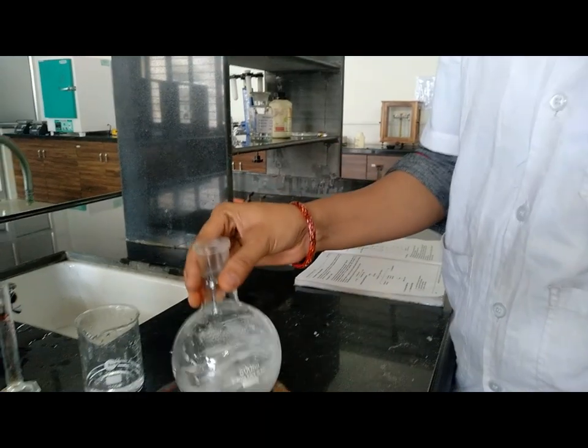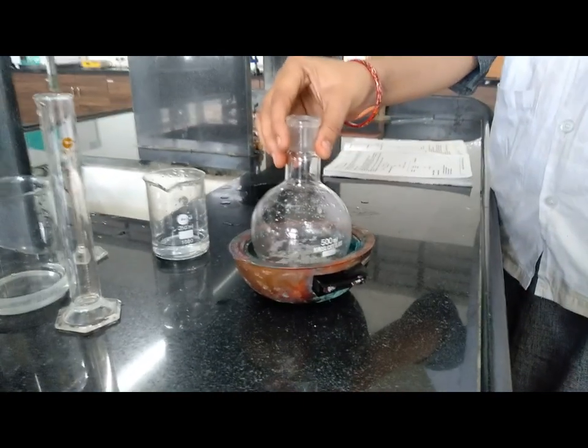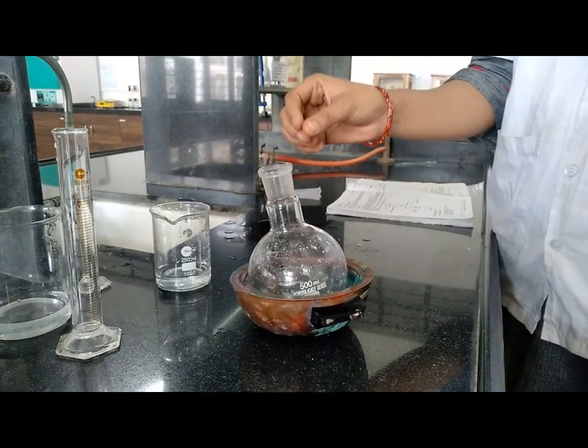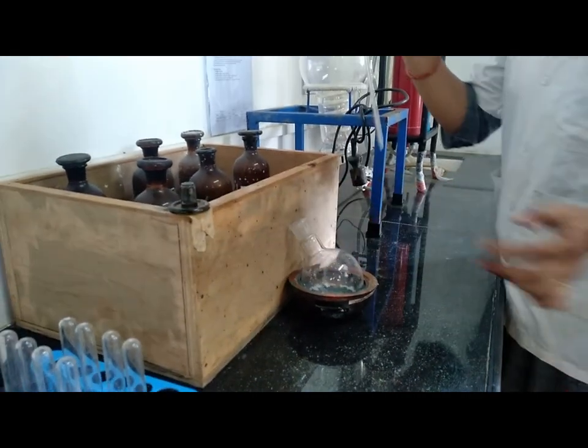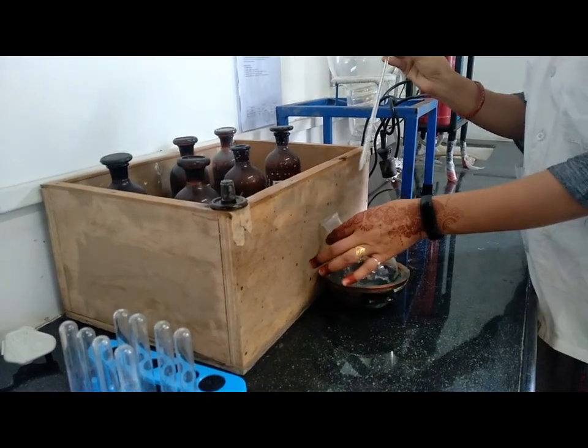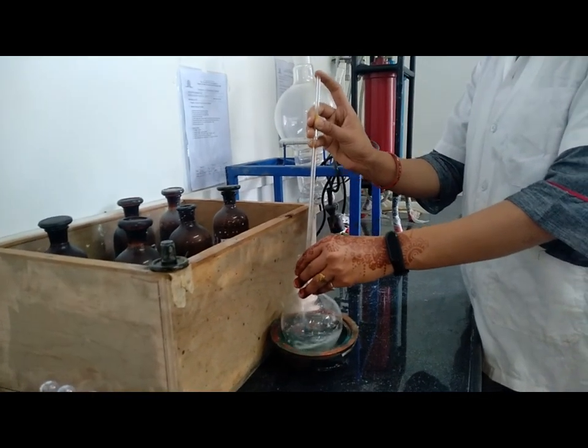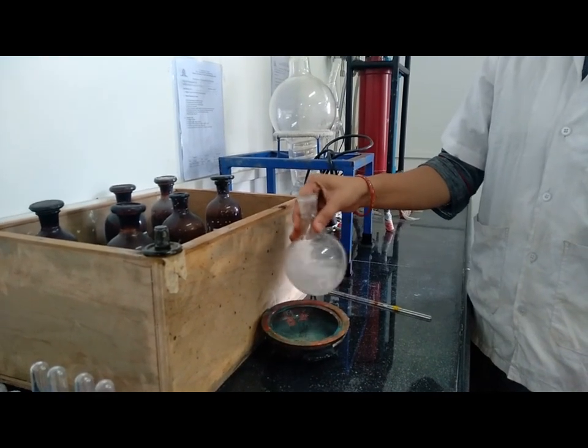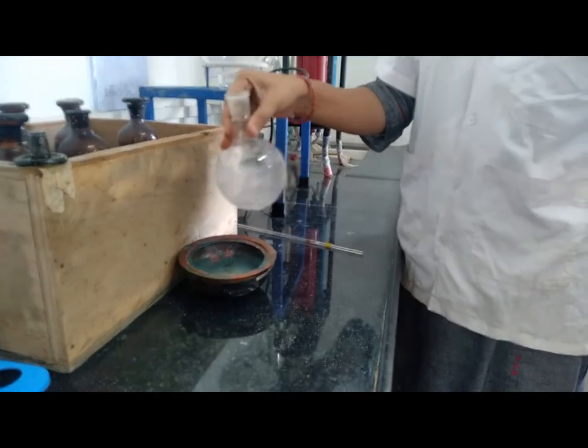Cool this solution in ice cold water for 30 minutes. Now add concentrated hydrochloric acid until the solution becomes strongly acidic. Shake continuously so that we get uniform, strong acidic solution.